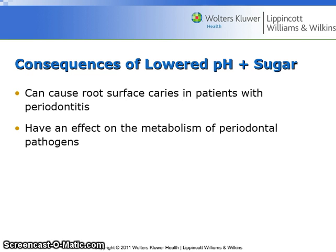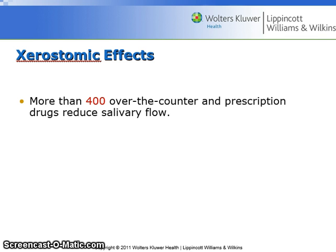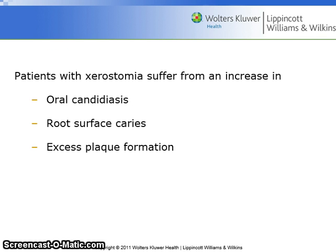Lowered pH plus sugar can cause root surface caries in patients with periodontitis and can affect the metabolism of periodontal pathogens. The physical flow of saliva helps to dislodge microbes from teeth and mucosal surfaces, causes bacteria to clump together so they can be swallowed before firmly attaching, and saliva also has antimicrobial components and components that repair and regenerate oral tissues. More than 400 over-the-counter and prescription drugs reduce salivary flow, and patients with xerostomia suffer from an increase in oral candidiasis, root surface caries, and excessive plaque formation.